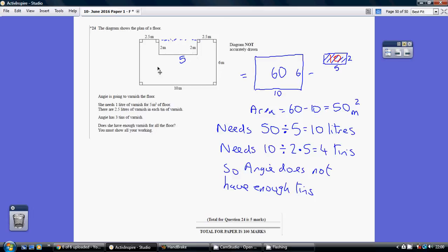So if this little bit wasn't here the area of the rectangle would be 10 times 6 is 60. Now this little rectangle here has got a base of 5. Well we know that because there's 10 all the way along the bottom and these two bits are 2.5 each. 2.5 and 2.5 is 5 so this bit must be 5 as well to make this 10.